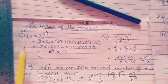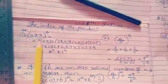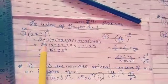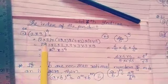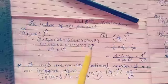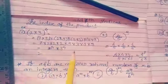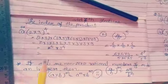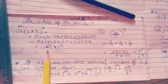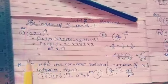Example 1: 2 into 3, raise to 4. Here, 2 into 3 is written 4 times. So we write 2 four times and 3 four times. Therefore, the answer is 2 raise to 4 into 3 raise to 4.